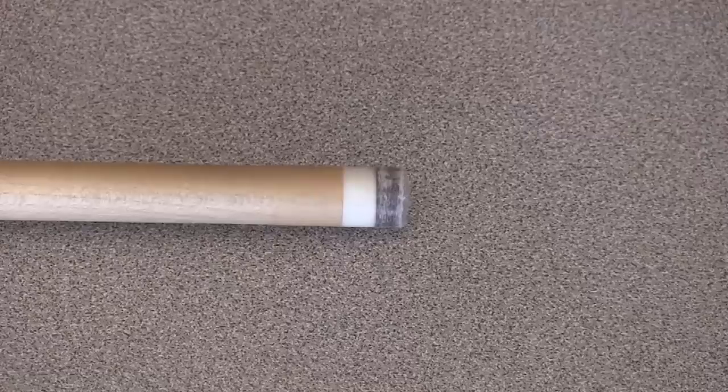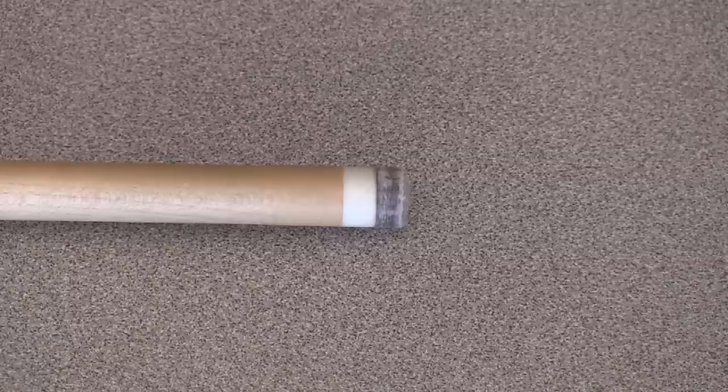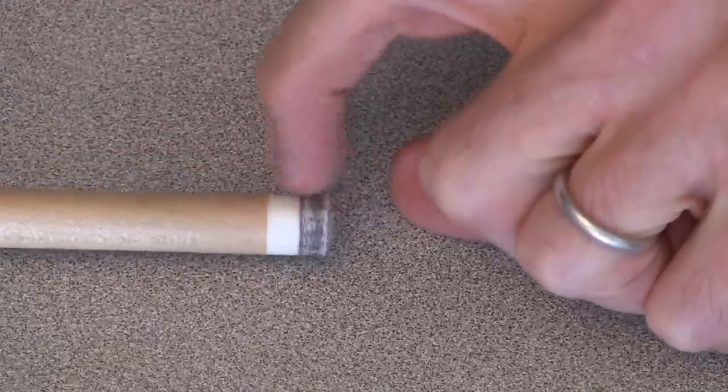This is what the tip should look like when you are done after removing the tape, with the tip diameter matching the ferrule diameter. You can check that it is smooth with your fingernail like this.